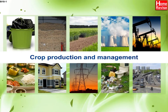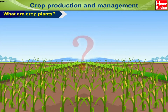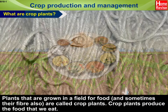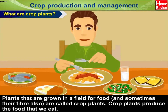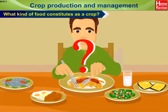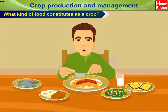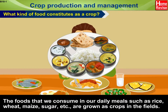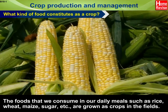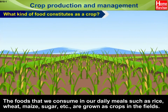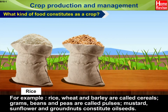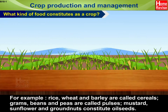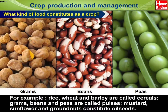Crop production and management. What are crop plants? Plants that are grown in a field for food and sometimes their fiber are also called crop plants. Crop plants produce the food that we eat. The foods we consume in our daily meals such as rice, wheat, maize, and sugar are grown as crops in fields. Crop plants are of various types — rice, wheat and barley are called cereals, while grams, beans and peas are called pulses.